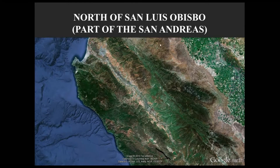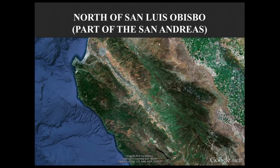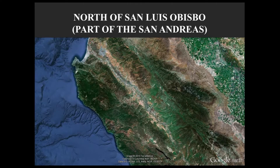On the other hand, at another part of the San Andreas fault north of San Luis Obispo, we have raised topography — hills and mountains — because of a restraining bend within the San Andreas that caused uplift: a positive flower structure.